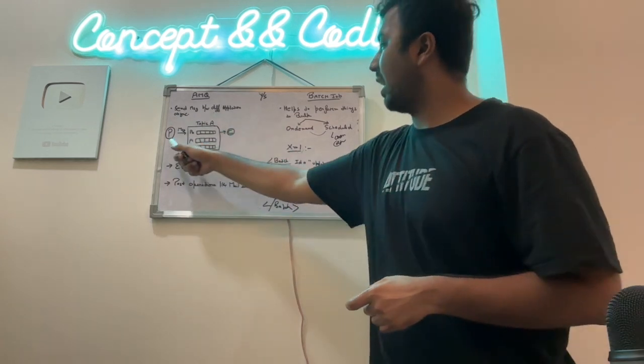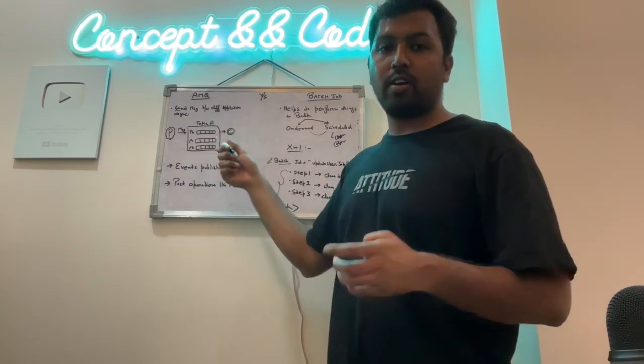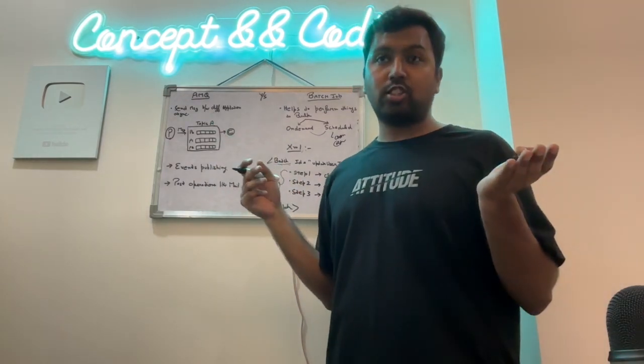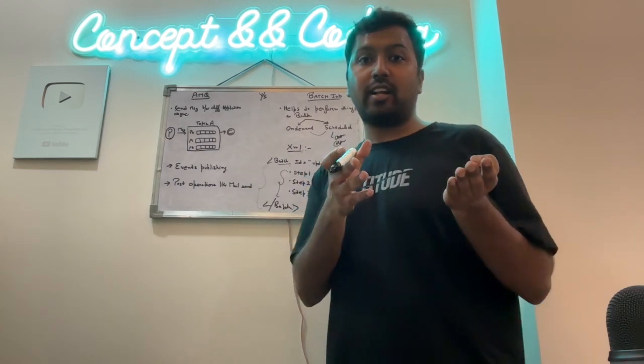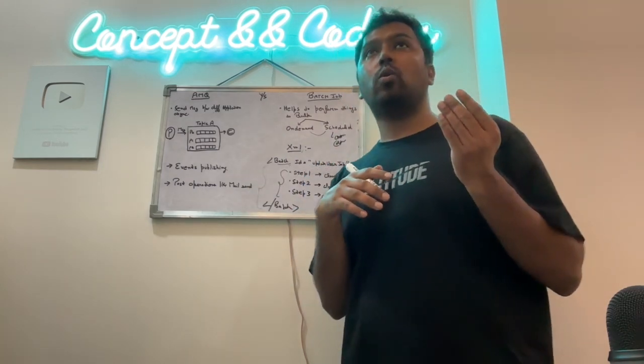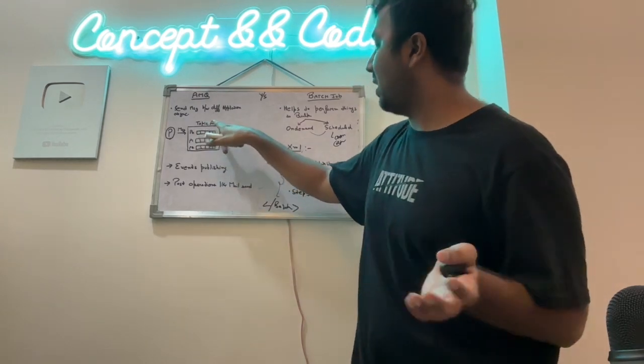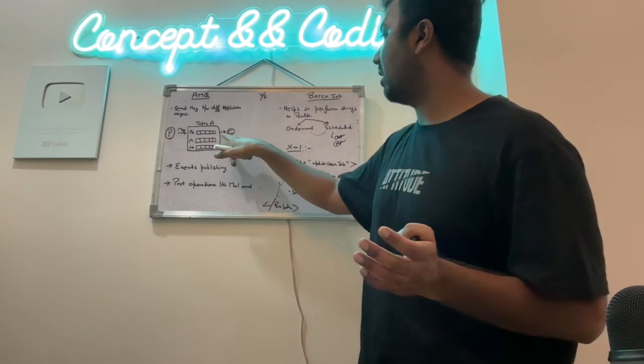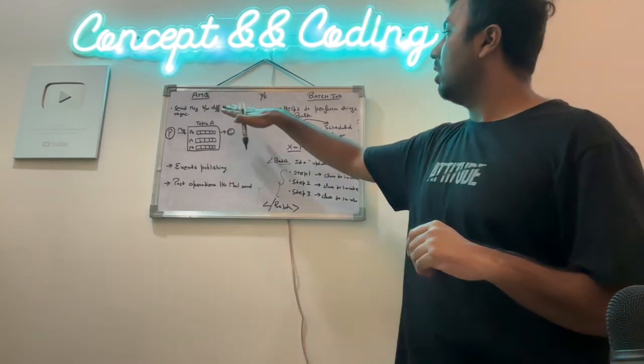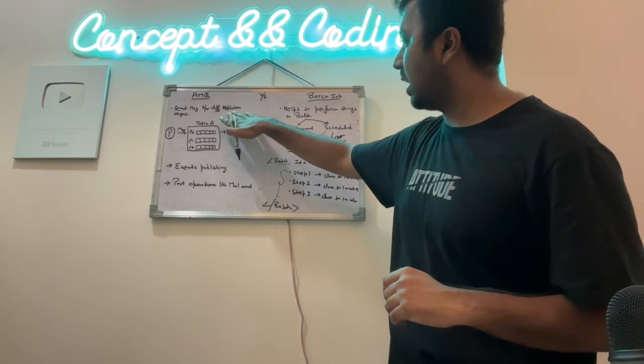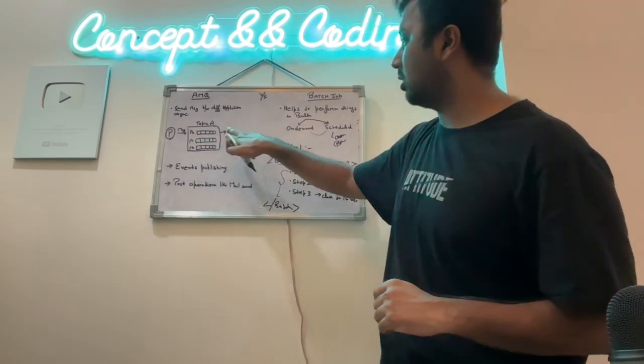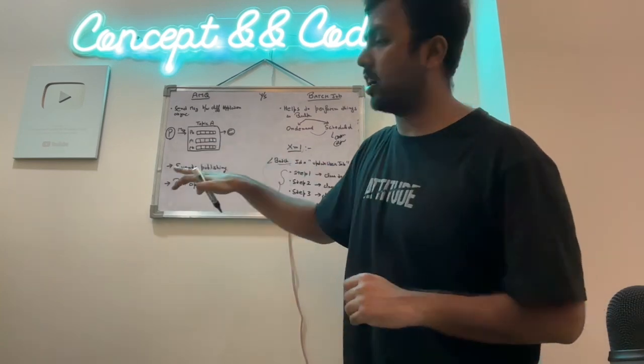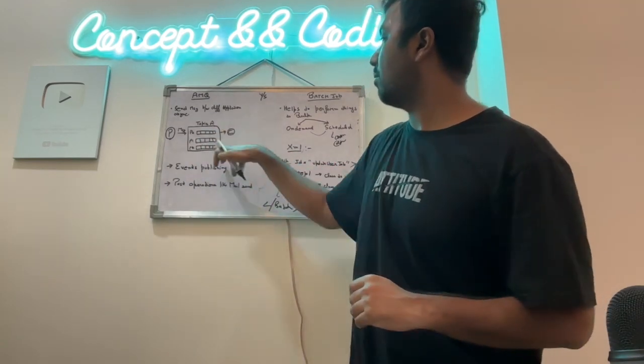So this is like a producer-consumer, and if you know Kafka, if you haven't seen, just check out the playlist, HLD playlist. You will properly understand there what is topic, what is partition, consumer group, and how they subscribe and all. But for now, what I wanted to say is that here, the two applications, one is producer, one is consumer, they are talking to each other asynchronously through a messaging queue.